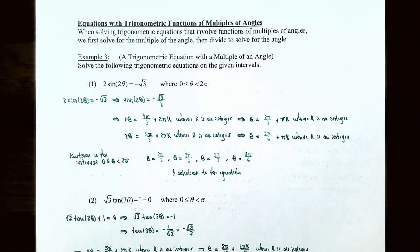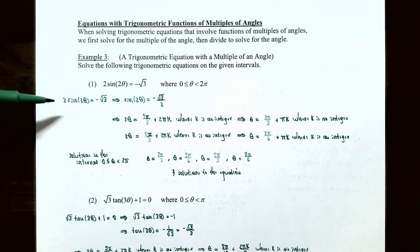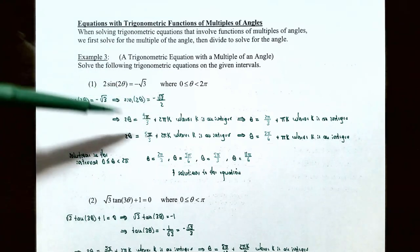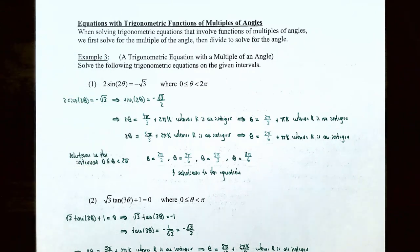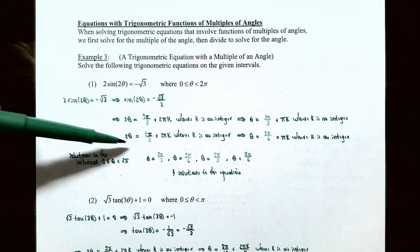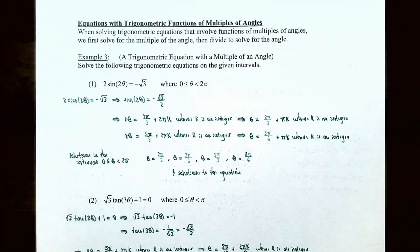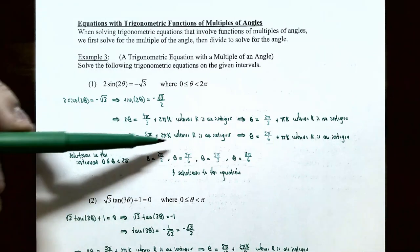Dividing both sides by two gives sine of two theta equals negative square root three divided by two. Since the sine is negative, the angle two theta must be in quadrant three or four. In quadrant three, the angle is four pi over three; in quadrant four, the angle is five pi over three. So the general solutions are: two theta equals four pi over three plus two pi k, or two theta equals five pi over three plus two pi k, where k is an integer.